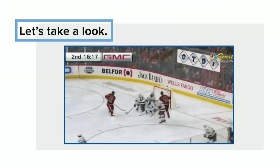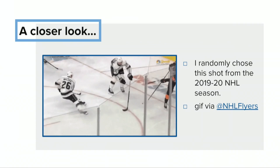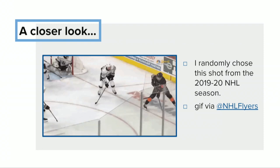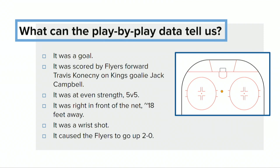I wanted to give you guys a little visual here — this is a goal that happened recently. To give you a closer look at this goal, this is a Flyers goal from this season, a couple of weeks ago. It's worth trying to figure out what can we say and what can't we say about this goal. Just by looking at the play-by-play data, we know that it was in fact a goal, scored by Flyers forward Travis Konechny on Kings goalie Jack Campbell. It was at even strength — five skaters on the ice for each team. It was right in front of the net, about 18 feet away, a wrist shot, and it caused the Flyers to go up two to nothing. I have a little orange dot right where the trackers say the shot was.